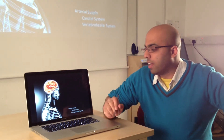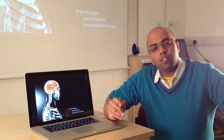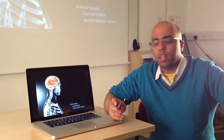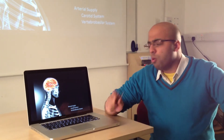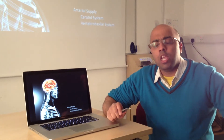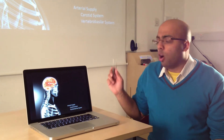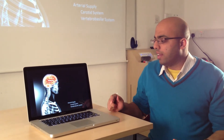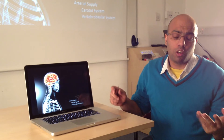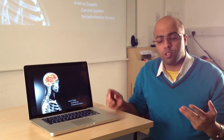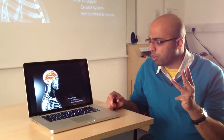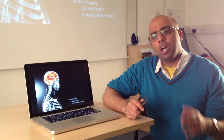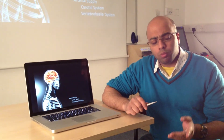Right then, so we're back again. In the last few videos we looked at the skull in a fair amount of depth. So what we're going to do now is we're going to start looking at the arterial supply to the head and neck — not just the arterial supply, but the veins as well. We're going to do this through three videos. Right now we're going to start talking about the carotid and vertebrobasilar systems.